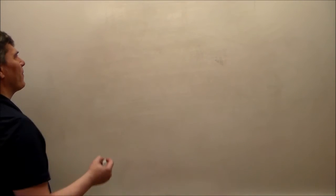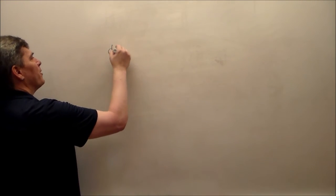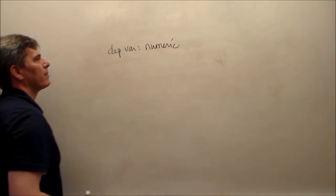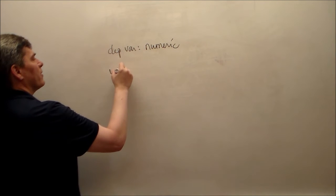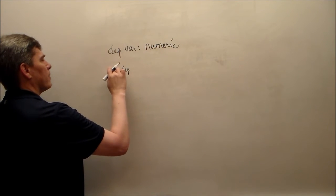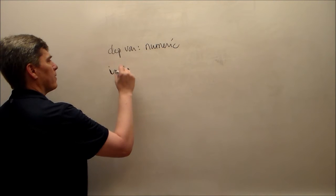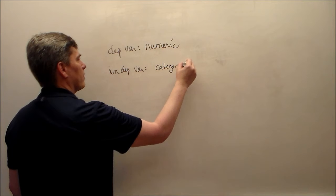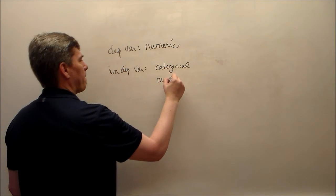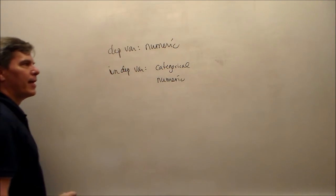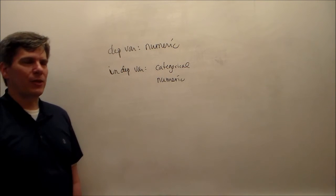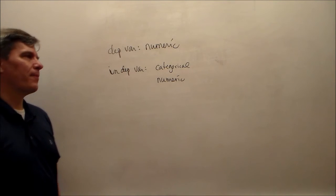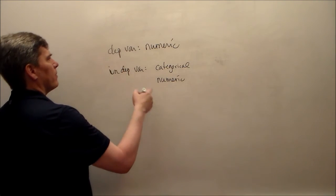It's all in your interpretation. So the dependent variable is still numeric. Independent variable—one's got to be categorical, one's got to be numeric, and beyond that, it could be any mixture. It tends to be just one numeric when we're talking about ANCOVA.